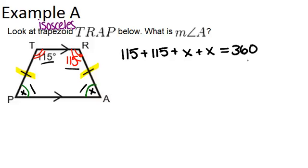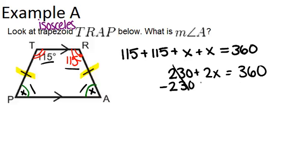Now I can solve this equation for x in order to get my answer. Combine like terms, and you get 230 plus 2x equals 360, then minus 230 from both sides, and you get 2x equals 130, which means x equals 65.